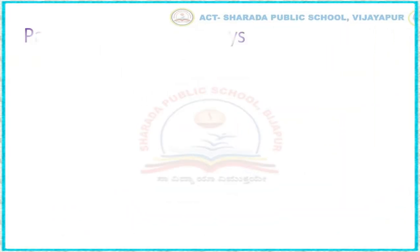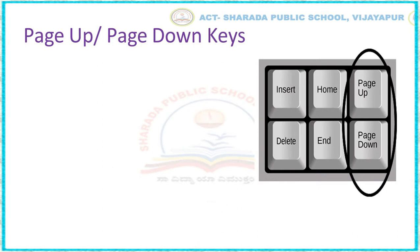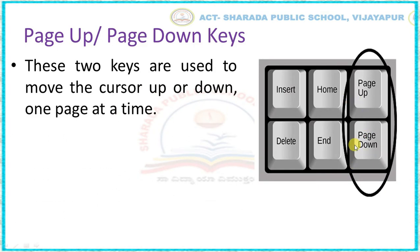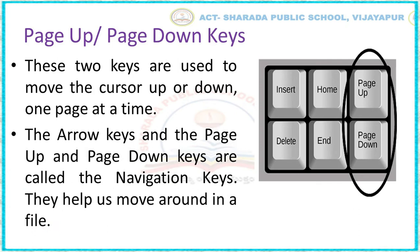Now we will move to PAGE UP and PAGE DOWN KEYS. Here you can see the image of PAGE UP and PAGE DOWN KEYS. These two keys are used to move the cursor up or down one page at a time. The ARROW KEYS and PAGE UP and PAGE DOWN KEYS are called NAVIGATION KEYS. They help us to move around in a document.